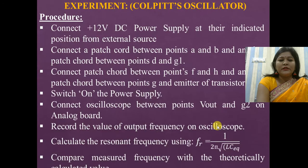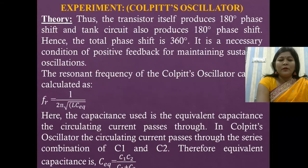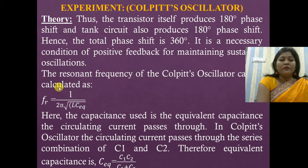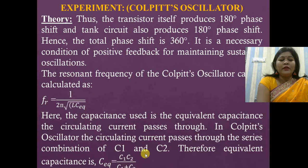The total phase shift is 360 degrees, satisfying the Barkhausen criteria. This is the necessary condition of positive feedback for maintaining sustained oscillations. The resonant frequency, or oscillation frequency, of the Colpitt's oscillator is calculated using the formula: F_R = 1 / (2π√(LC_eq)), where C_eq = (C1 × C2) / (C1 + C2).